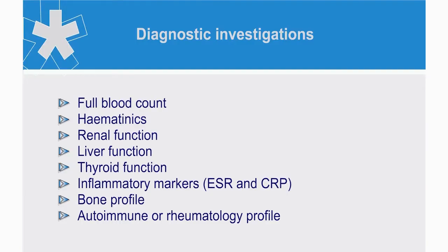Initial blood tests that can be done include a full blood count with hematinics, renal function, liver function, thyroid function, inflammatory markers such as an ESR or a CRP, bone profile, and if indicated, an autoimmune profile.